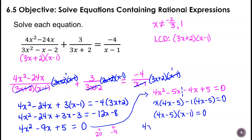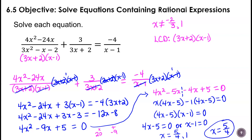Setting each factor equal to zero gives possible solutions of 5/4 and 1. But looking back at our excluded values, 1 is an excluded value, so the only solution is x equals 5/4. That was kind of long and messy — you can see where you might get lost in the process if you're not careful with your organization.